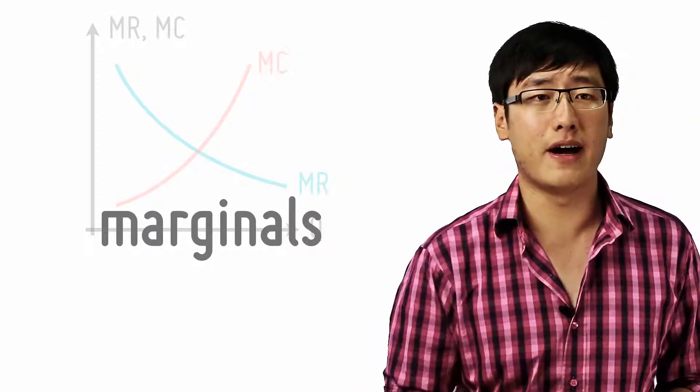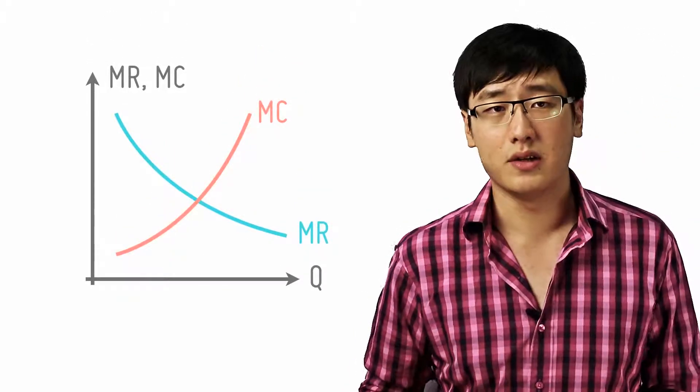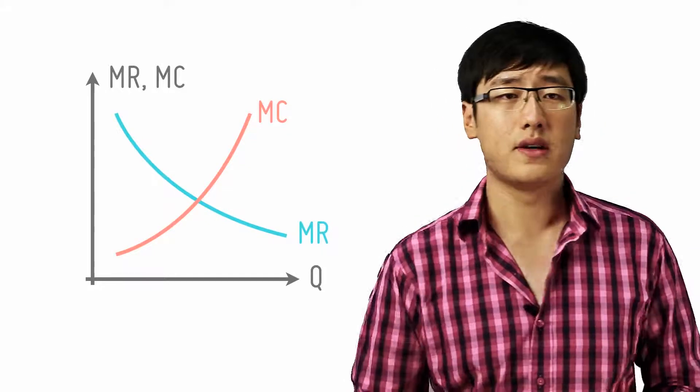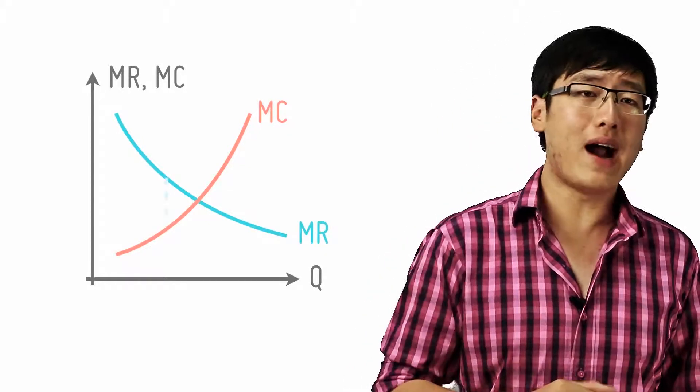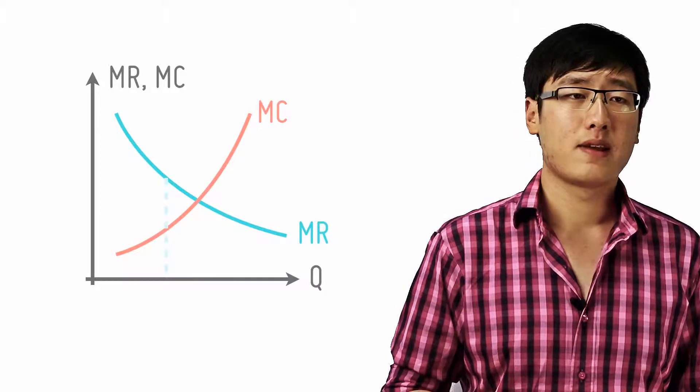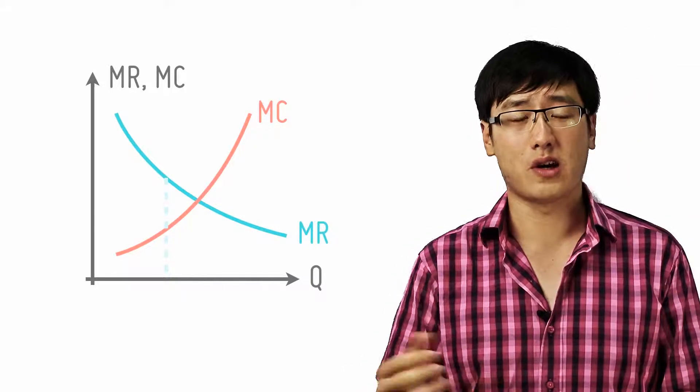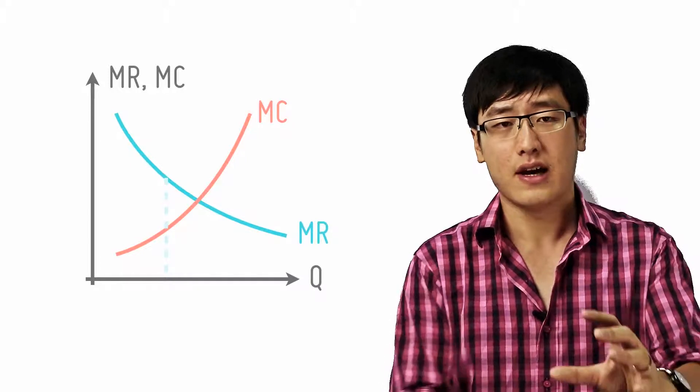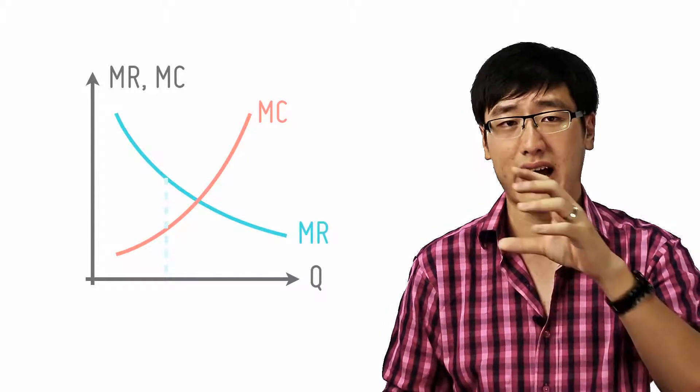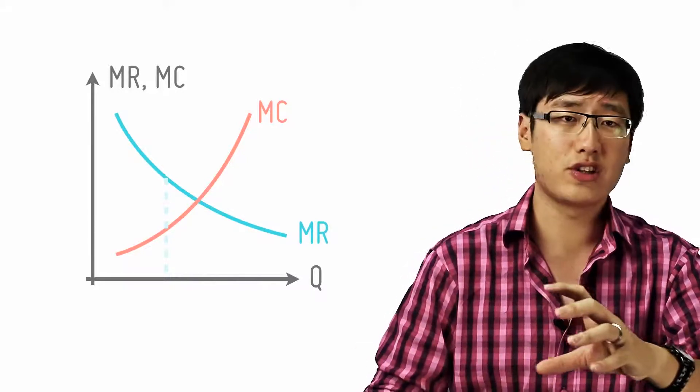So if profits are to be maximized, MR (marginal revenue) equals MC (marginal cost). Why? Well, if MR was higher than MC, one additional unit adds more to your revenue than the cost it requires, because the additional unit's revenue is MR. The cost of the additional unit is MC.